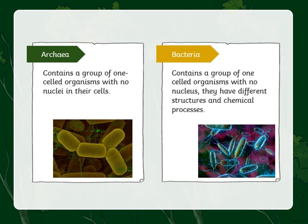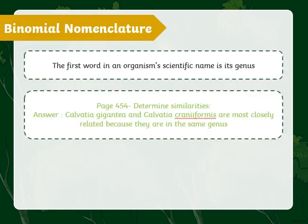We will then move to Archaea, which is a group of unicellular organisms with no nuclei in their cells. After that, we will talk about bacteria and the other domains, and then we will talk about binomial nomenclature, which is the first two words in an organism's scientific name.